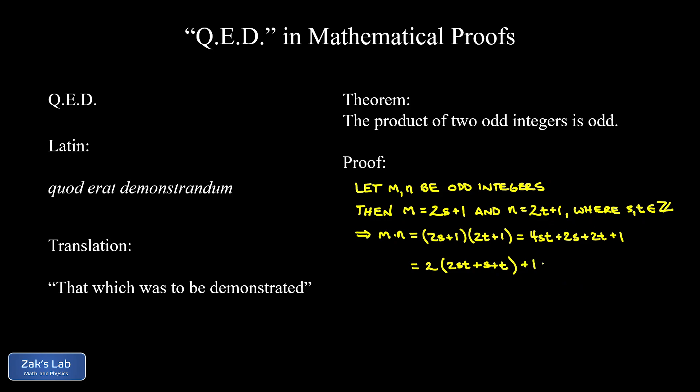But then we realize 2ST plus S plus T is just some other integer. So I'm going to go ahead and call that K. And again, we'll indicate the K belongs to the set of integers.